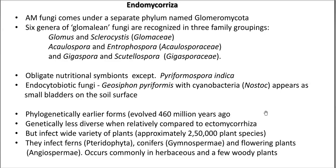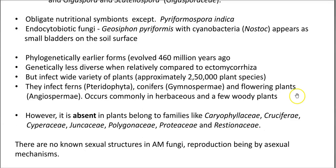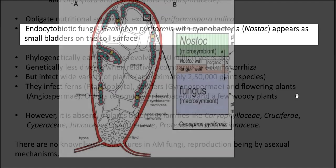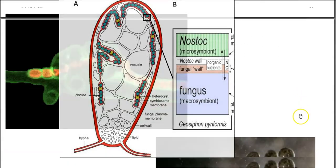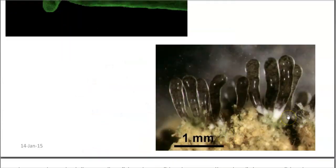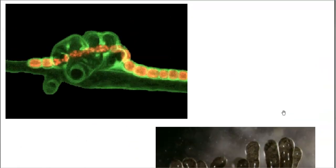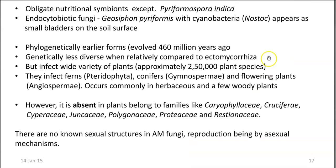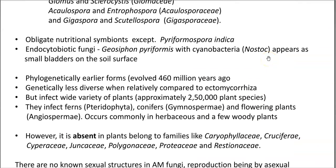All other endomycorrhizas grow in tight association with the plant system only. Some endomycorrhizas have been found associated specifically with certain cyanobacteria, and are technically referred to as endocytobiotic fungi. A classical example is Geosiphon pyriformis, an endomycorrhiza associated with the cyanobacterium Nostoc. They appear on the soil surface as small bladder-like formations. When visualized microscopically, both partners are visible — the red color denotes the cyanobacterial association and the green color denotes the endomycorrhizal fungi forming a tight endocytobiotic relationship.